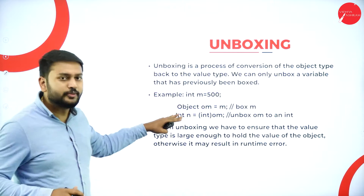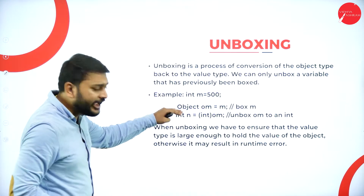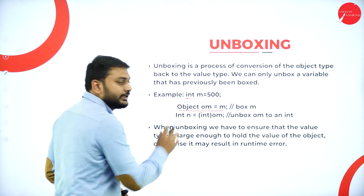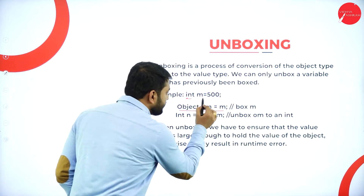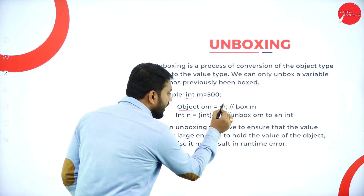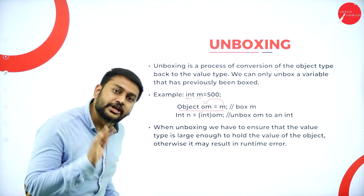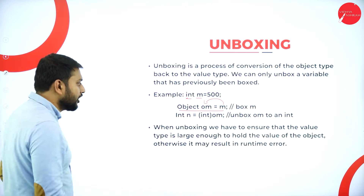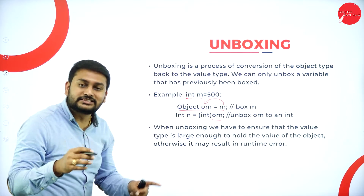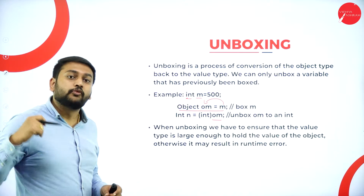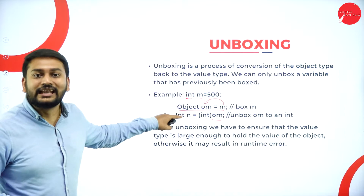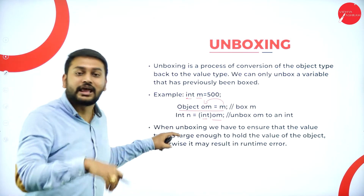If I want to unbox it, it's just the reverse way. Observe here — I have already done boxing. First I have taken the integer data type and I have a variable m = 500, so I have the value in m. After that I will box it by storing m in the object om of type object. Boxing is done. Now to unbox it — observe, the object name is om. Within parentheses, I mention the data type I want to convert the object into.